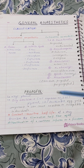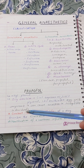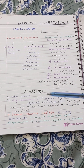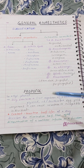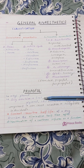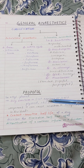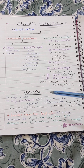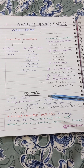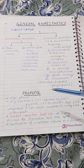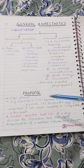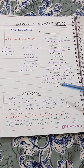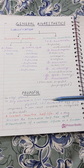Propofol has a context-sensitive half-life. IV anesthetics are not given once for an indefinite effect. If a surgery lasts 3–4 hours, we need the IV anesthetic to work throughout that period. A single bolus injection cannot provide anesthesia for 3–4 hours, so we need to give a continuous infusion of the general anesthetic agent.